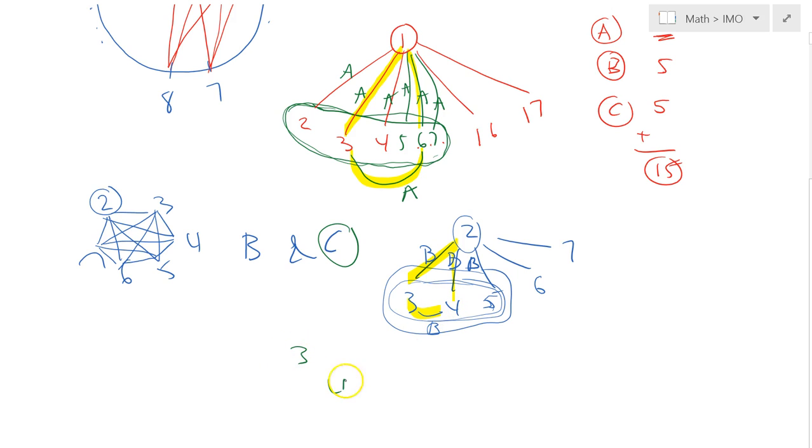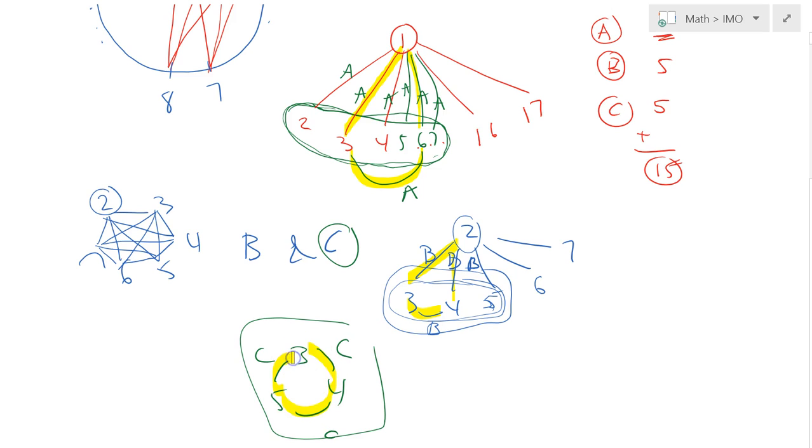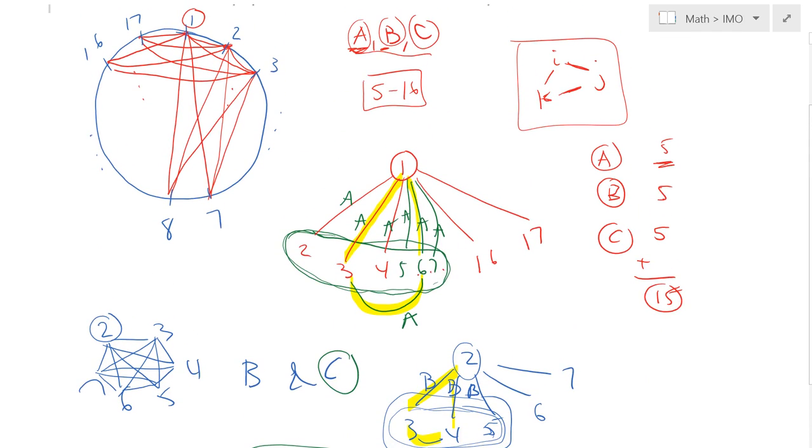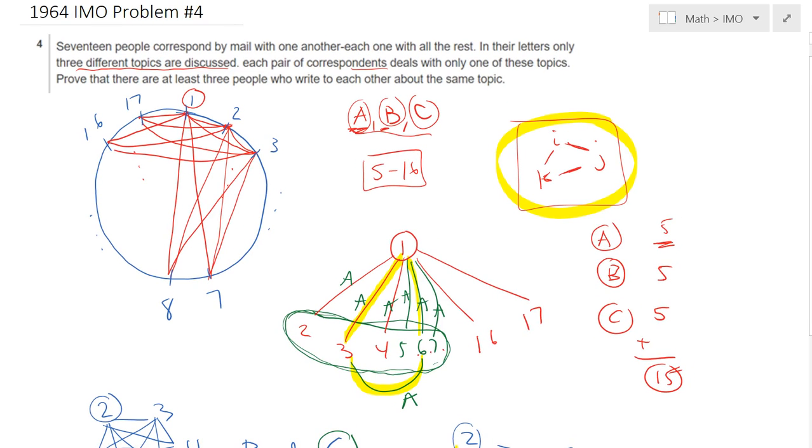But it's impossible because 3, 4, 5, if they all discuss topic C with themselves, then we have found the cycle where 3 people discuss the same topic. So therefore we have just proven step by step that it is impossible to not have 3 people discussing a topic among 17 people.